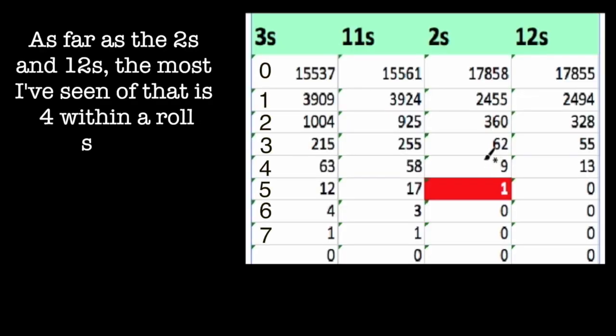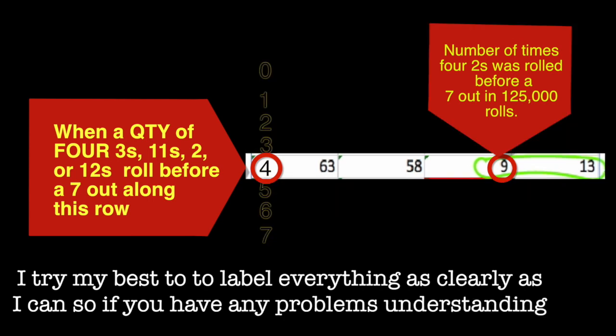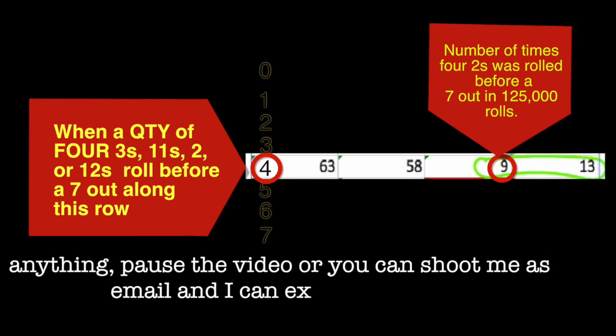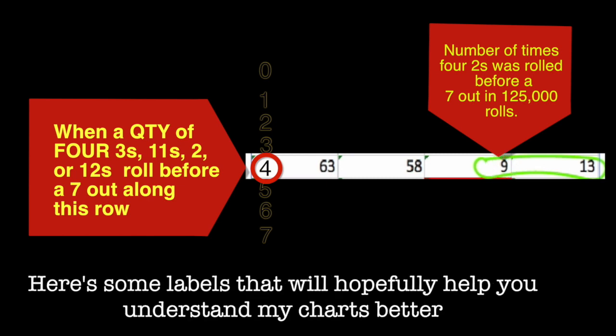As far as the twos and twelves, the most I've seen of that is four within a roll series. I try my best to label everything as clearly as I can. So if you have any problems understanding anything, pause the video and you can shoot me an email and I can explain further. Here's some labels that will hopefully help you to understand my charts better.